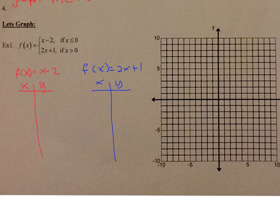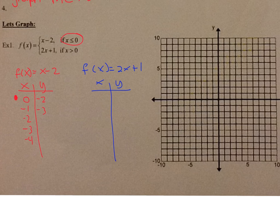Go to your table of values. My x values have to be less than or equal to 0, so I'm going to start with 0. Since it can be 0, put a dot to indicate a closed circle there. Then we'll use negative 1, negative 2, negative 3, negative 4. Look at the y values — for 0 we get negative 2, then negative 3, negative 4, negative 5, and negative 6.